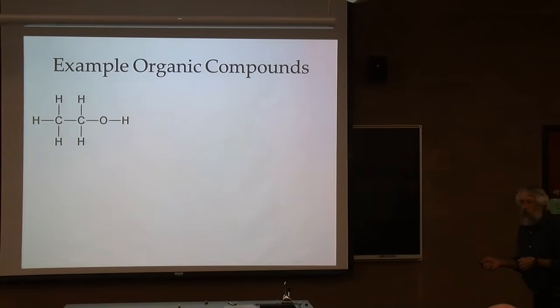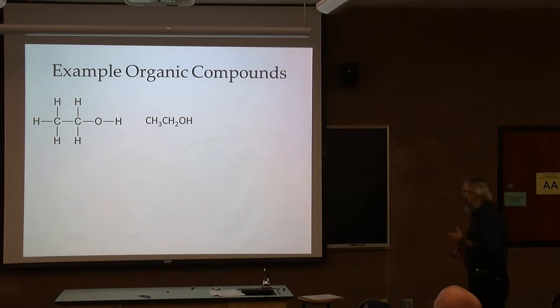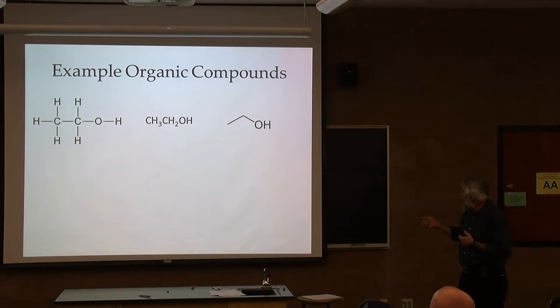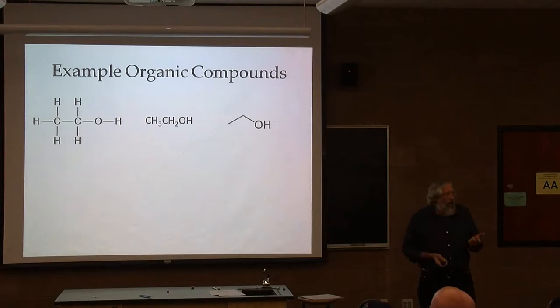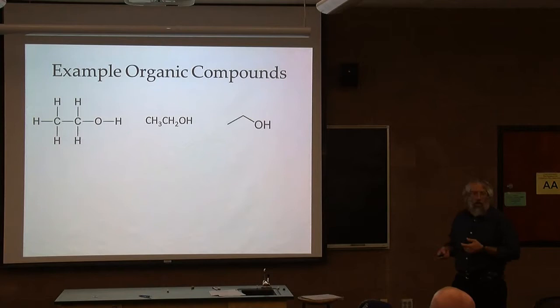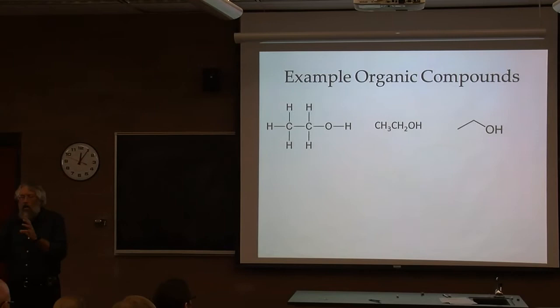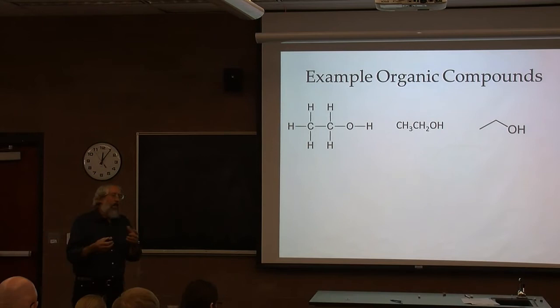Drawing things in a Lewis structure is somewhat cumbersome. Organic chemists tend to use condensed formulas and skeletal formulas instead. The condensed formula still includes all the atoms but doesn't explicitly show the bonds. In a skeletal structure, the end of a line represents a carbon with three hydrogens attached, and wherever there is a bend in the line that's also a carbon, in this case with two hydrogens attached. In organic chemistry we talk about functional groups — characteristic arrangements of atoms that confer physical and chemical properties. The functional group here is called an alcohol.